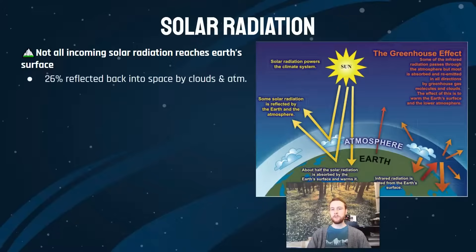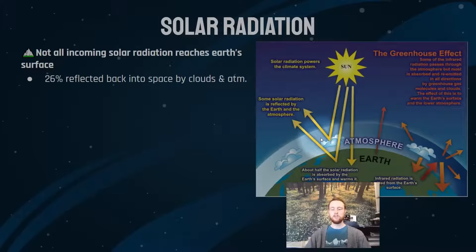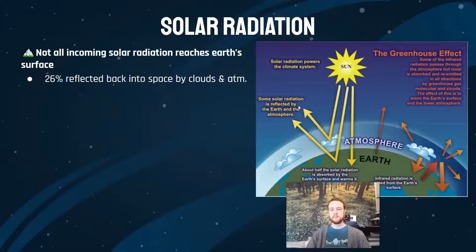About a quarter of all incoming radiation is going to be reflected right back out into space by the atmosphere and by the clouds. About a quarter of that incoming radiation will hit a cloud or hit some sort of gas molecule in the atmosphere and it'll just be bounced right back out into outer space.